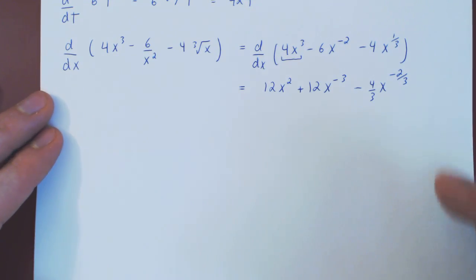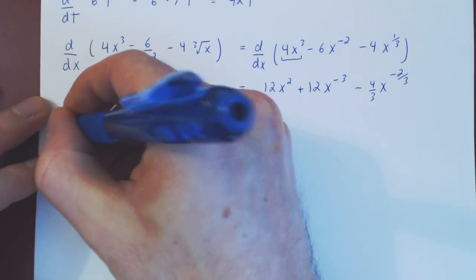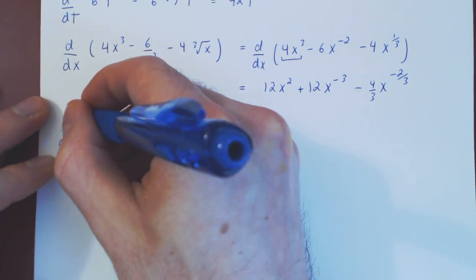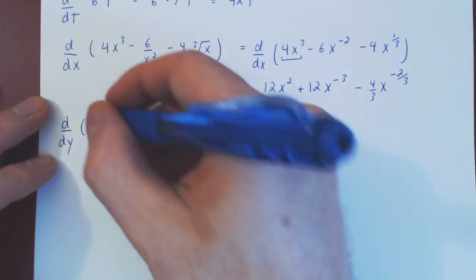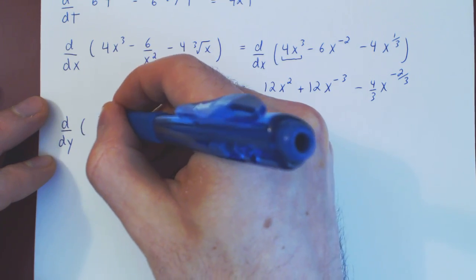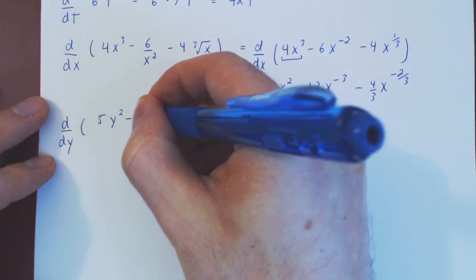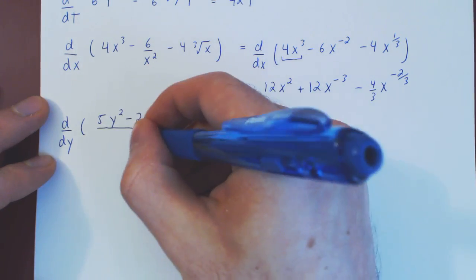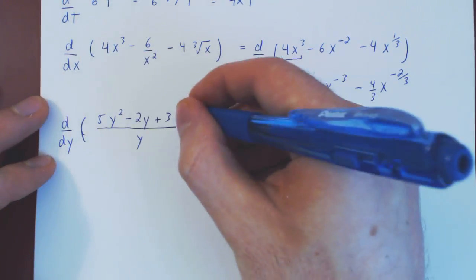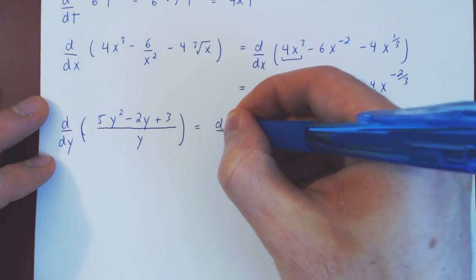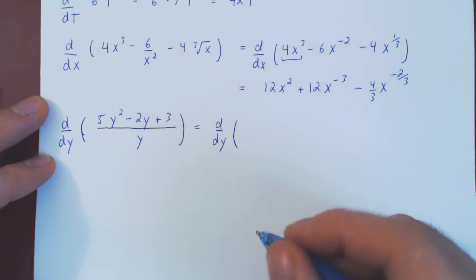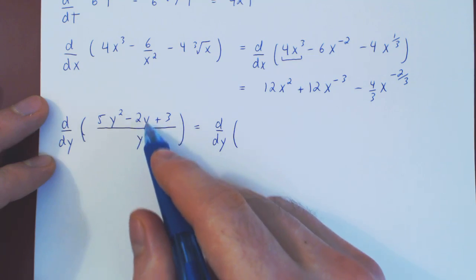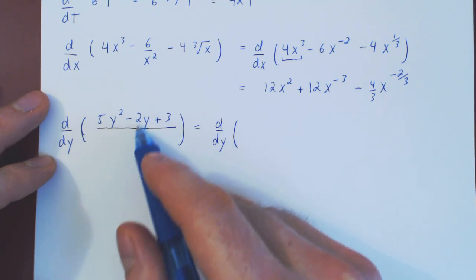What if we had now the following example? We'll differentiate with respect to y the following function of y. Say 5y squared minus 2y plus 3 over y. Naturally here, the simplest way of differentiating this function is to divide through each term by y.